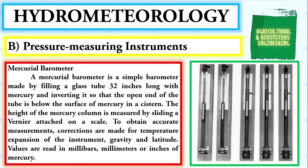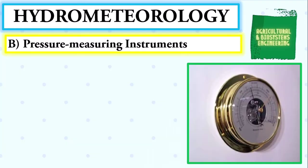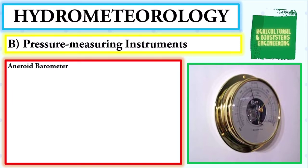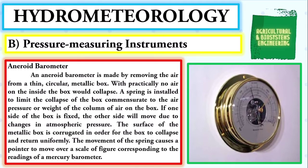We begin with the mercurial barometer — a simple barometer made by filling a glass tube 32 inches long with mercury and inverting it so that the open end of the tube is below the surface of mercury in a cistern. The height of the mercury column is measured by sliding a vernier attached on a scale. Corrections are made for temperature expansion of the instrument, gravity, and latitude. Values are read in millibars, millimeters, or inches of mercury.